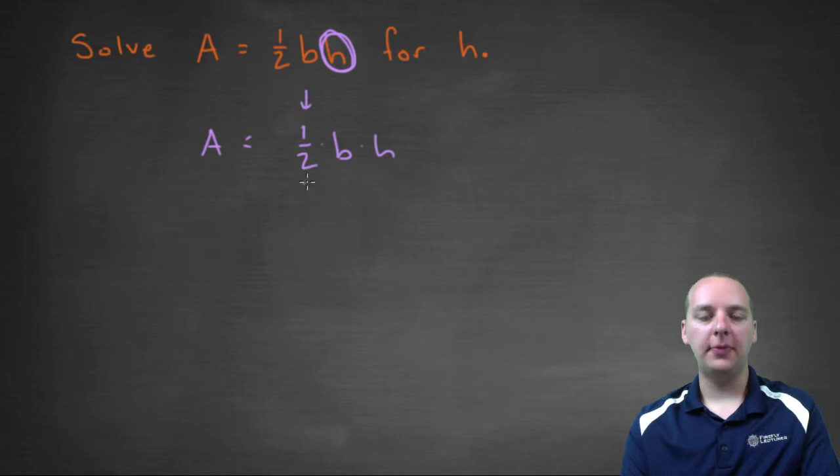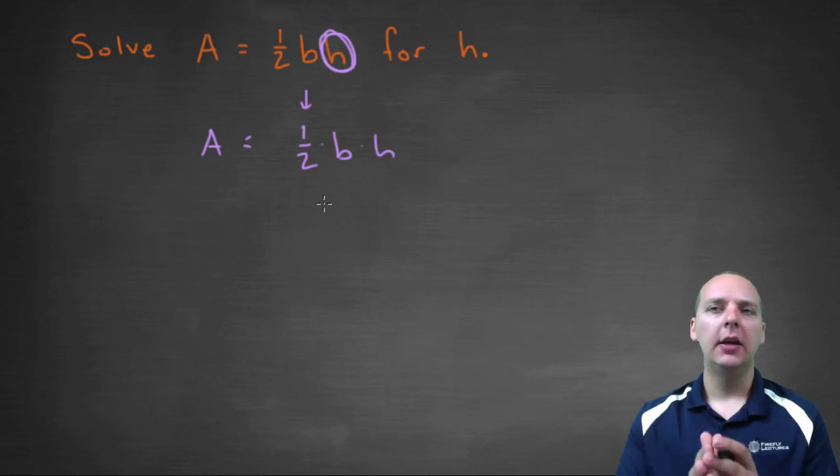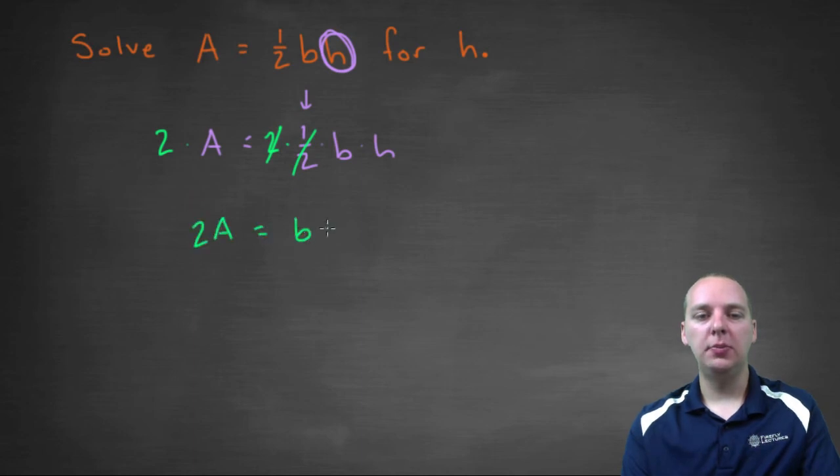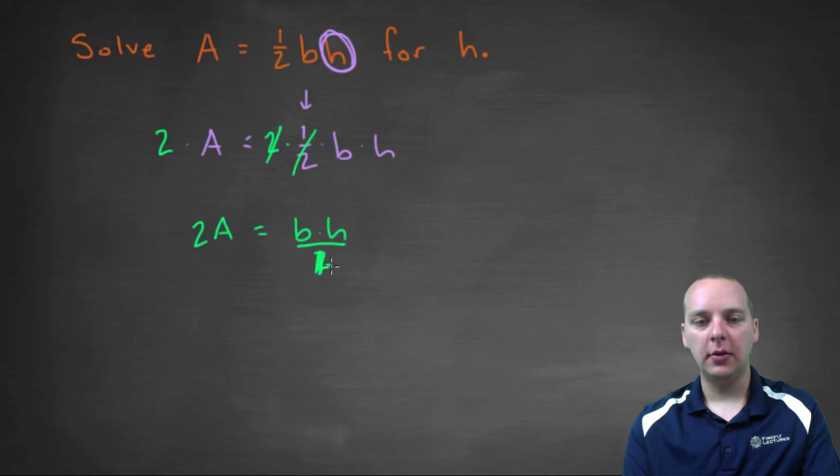To get rid of the one-half, you could divide both sides by a half - technically that's right. But dividing by fractions can be a little confusing. I think what might be easier would be to multiply both sides by two. Because two times a half is one and it'll cancel. So we'll have 2A equals BH. And then to solve for H, we'll divide both sides by B. So H equals 2A over B.